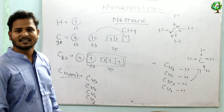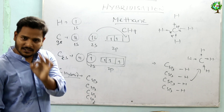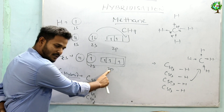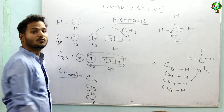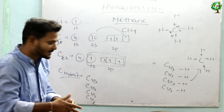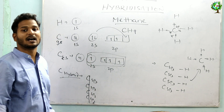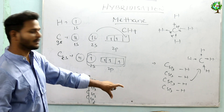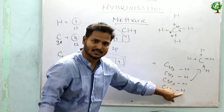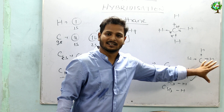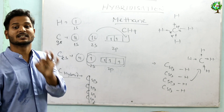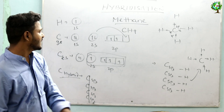Now the definition: hybridization means it is the intermixing of orbitals which is associated with similar energy to form same-energy orbitals. Here the 2s and 2p orbitals are intermixed and four SP3 hybrid orbitals are formed. Now you can make bonds and form the methane molecule by CSP3-H bonds. Now the 4 bonds are identical.